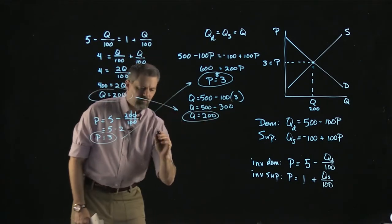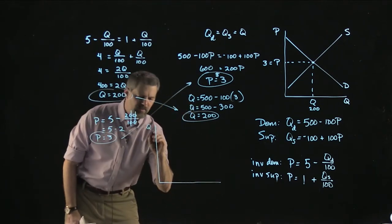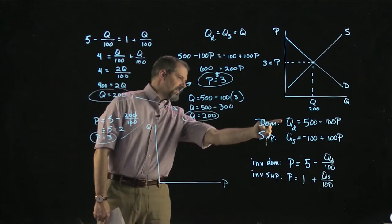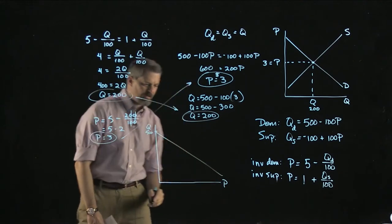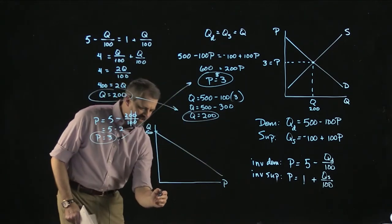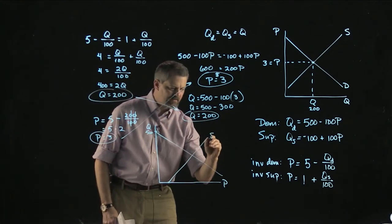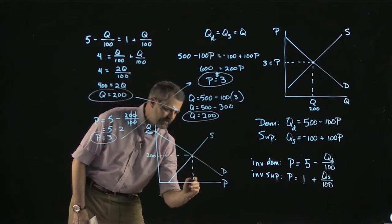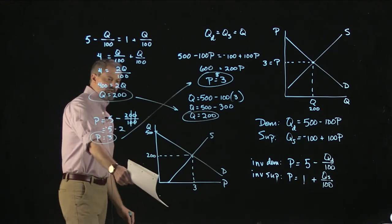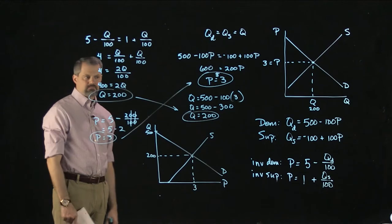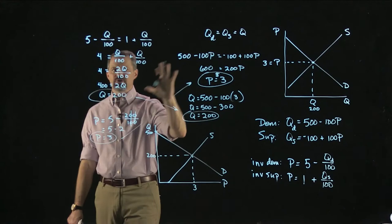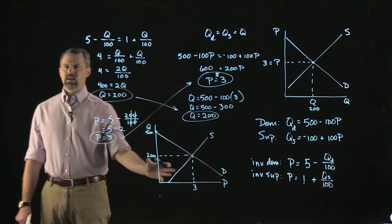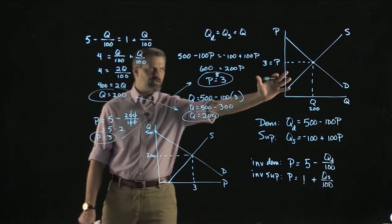If we graph using the demand and supply curves, Q is on the vertical axis and P is on the horizontal axis. The demand curve has an intercept of 500 and is downward sloping; the supply curve has an intercept of negative 100. We've solved for equilibrium quantity of 200 units and price of $3. This graph is just the inverse of the traditional picture. I'd encourage you to draw graphs the way you're used to — I'm showing this version just to reinforce what's going on.